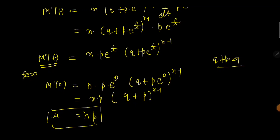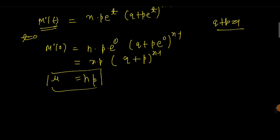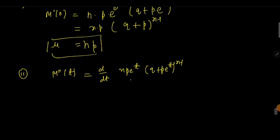We got our mean from the moment generating function. Now to find the variance, we need the second derivative M''(t). So we need to differentiate again: d/dt of [n·p·e^t·(q + p·e^t)^(n−1)]. We can see this is a product of two functions, so we apply the product rule — first we derive n·p·e^t, then the second term.